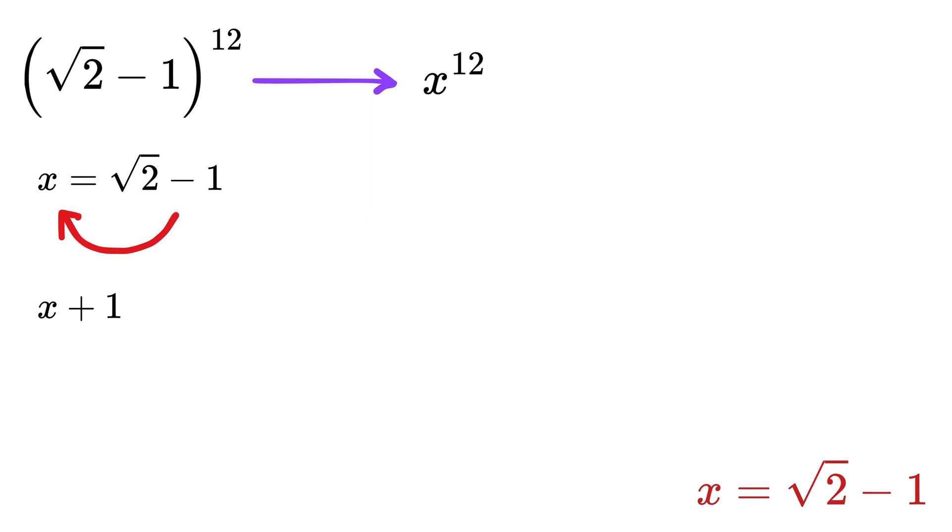Now take this 1 on the left side to get x + 1 = √2. After this, let us square both sides to get (x+1)^2 = 2.